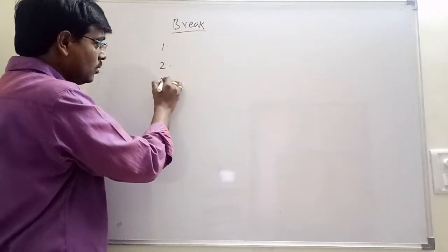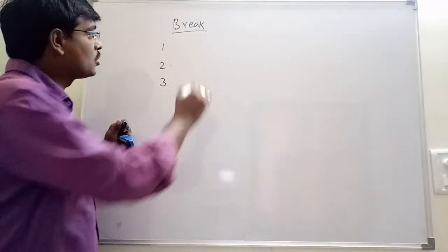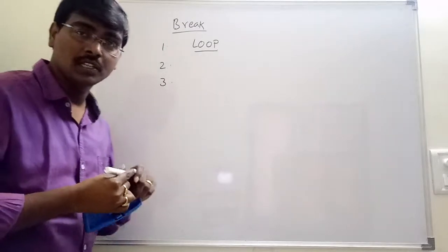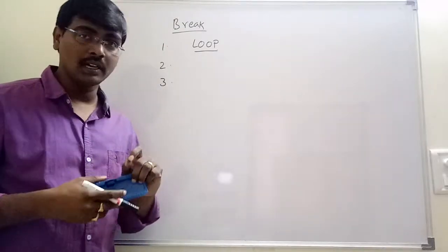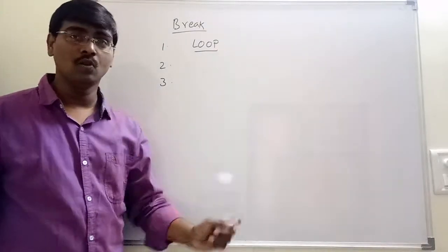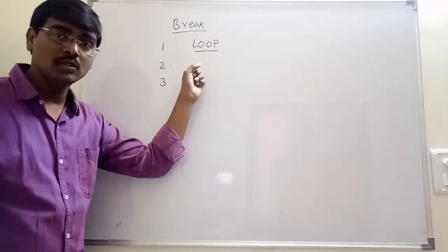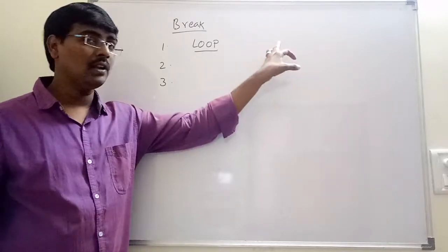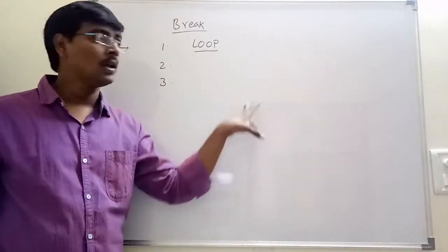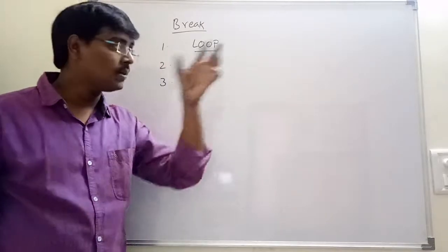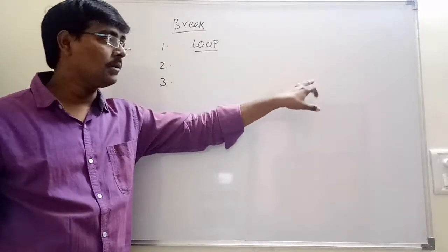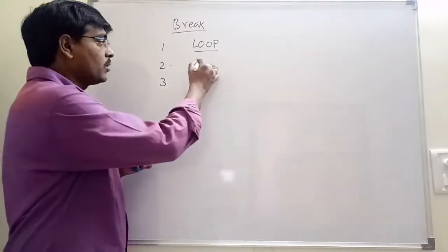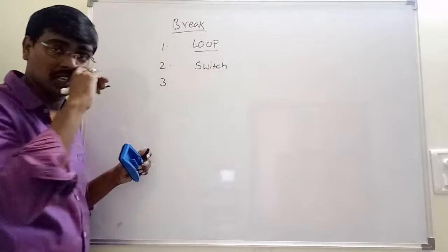We have mainly three uses of break. The first one is to come out of a loop — whenever a loop is executed based on some condition, we use break to exit. The second one is to come out of a switch statement. Whenever a choice matches a label, we execute the statements for that case, and after completion, we use break to exit the switch.